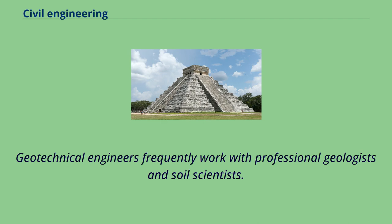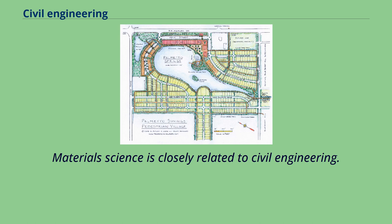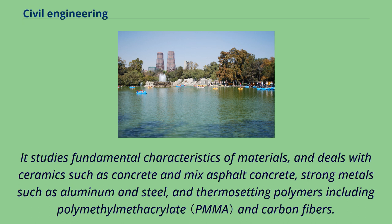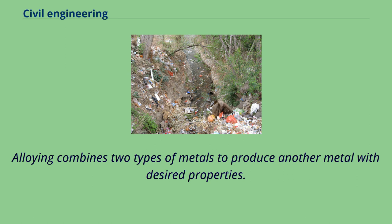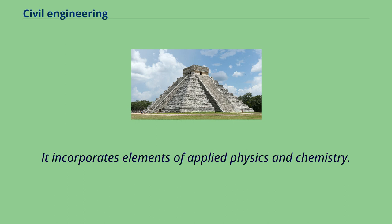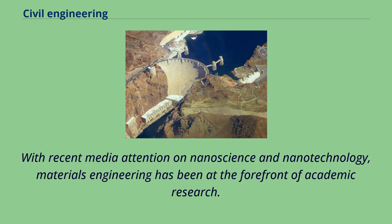Material science is closely related to civil engineering. It studies fundamental characteristics of materials and deals with ceramics such as concrete and mixed asphalt concrete, strong metals such as aluminum and steel, and thermosetting polymers including polymethyl methacrylate and carbon fibers. Materials engineering involves protection and prevention. Alloying combines two types of metals to produce another metal with desired properties. It incorporates elements of applied physics and chemistry. With recent media attention on nanoscience and nanotechnology, materials engineering has been at the forefront of academic research. It is also an important part of forensic engineering and failure analysis.